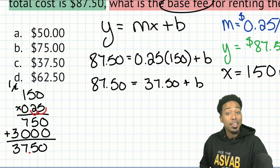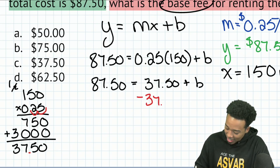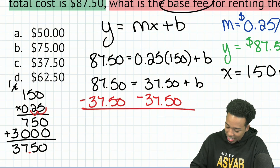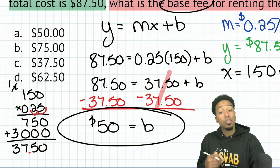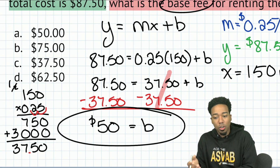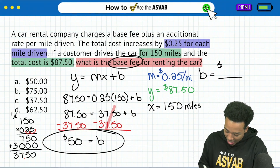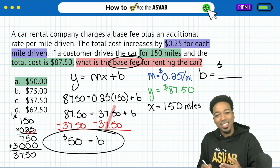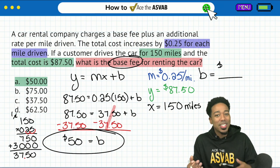So we have $87.50 equals $37.50 plus that initial value. The last step we need to take is to get rid of that $37.50 by subtracting it on both sides. $37.50 subtracted on both sides cancels on the right side and gives us a flat $50. And there it is — that's the initial value, that's the initial charge to go ahead and rent this car. That's problem number one — congratulations if you got it. And even if you didn't, were you able to learn from the mistakes? Let me know in the comments.